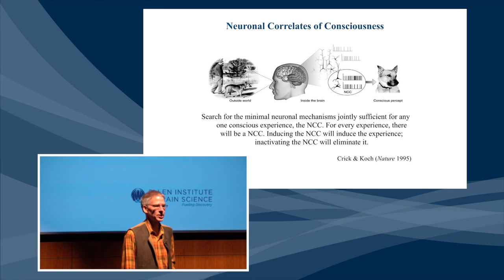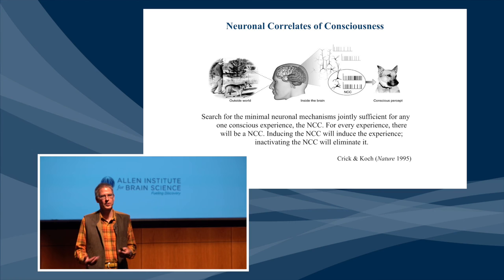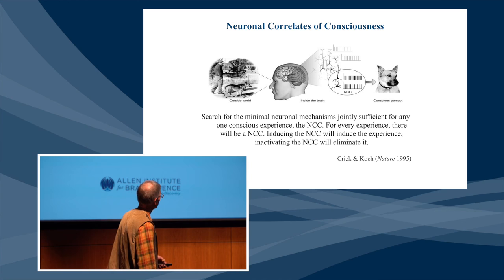Are they in one place? Are they distributed across the brain? What is the commonality if you see a dog versus a cat, versus a face, versus a house? Is it a set of neurons? Is it a particular brain region? Is it a particular pattern of activity? Is it a standing wave of synchronized activity? A particular molecular constituent? These are all proposals that people have made.